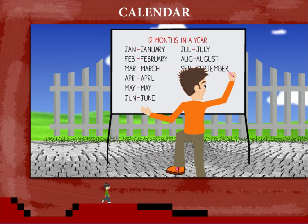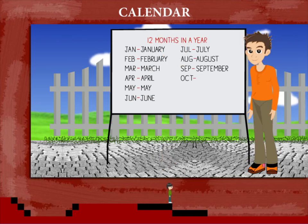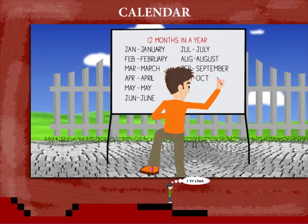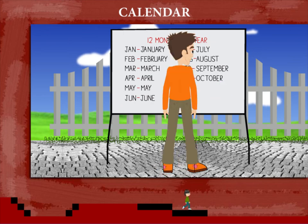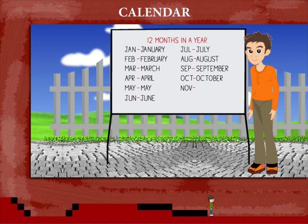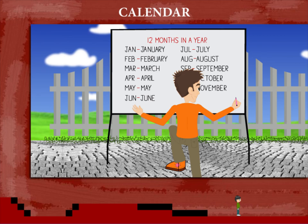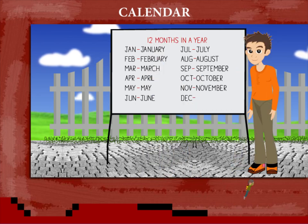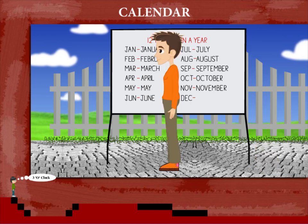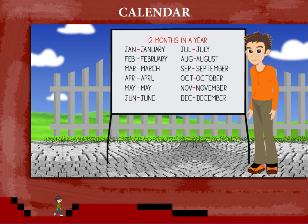Oct is the short form for October, the tenth month of the year. Nov is the short form for November, the eleventh month of the year. Dec is the short form for December, the twelfth month of the year. This completes the calendar. Nice work, Snooty!